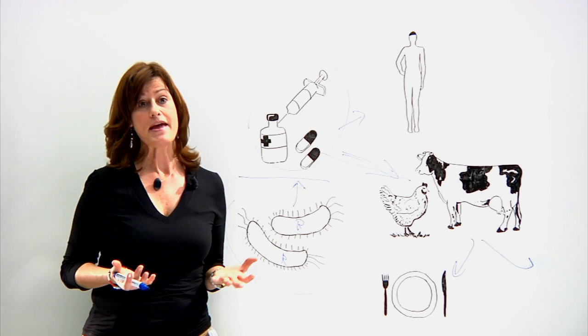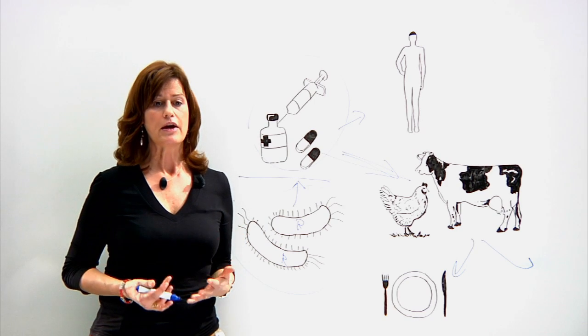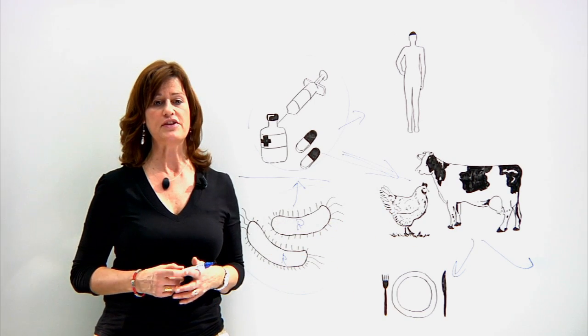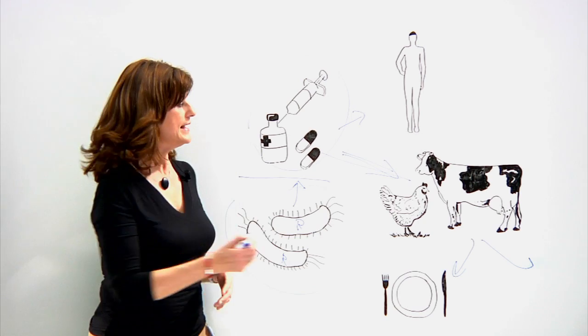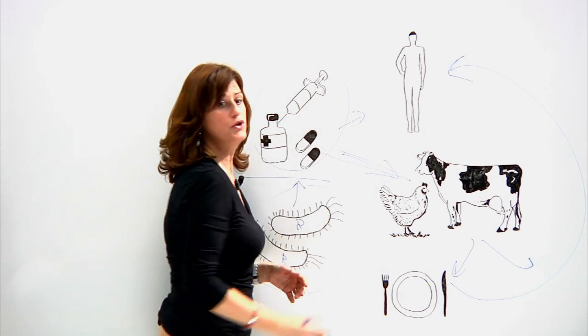Food can be a vehicle for transmitting resistant bacteria, as zoonotic bacteria live in the animals' gastrointestinal tract. These bacteria can then go from animals through food back to humans.